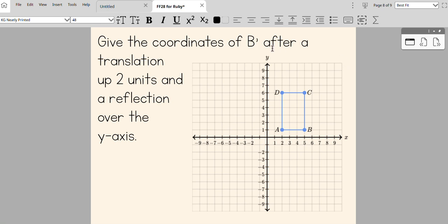All right, we want to give the coordinates of B prime. That means all I have to worry about is B over here, nothing else, just B.